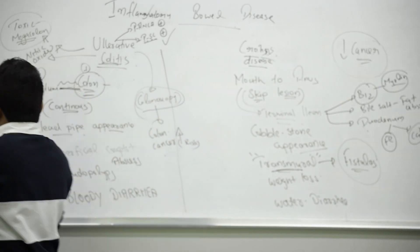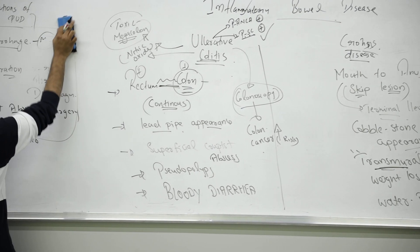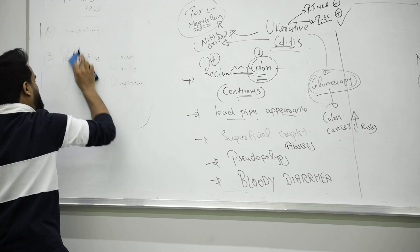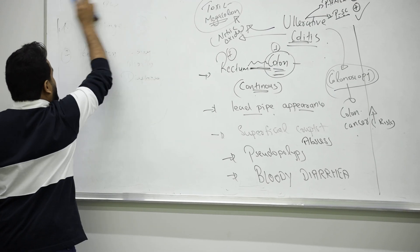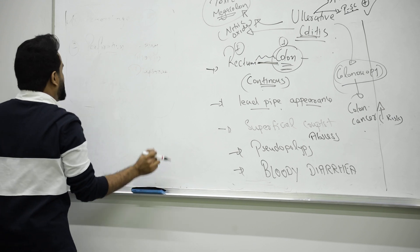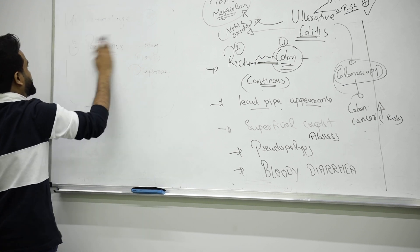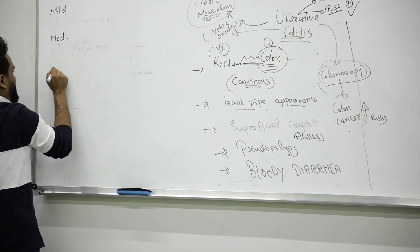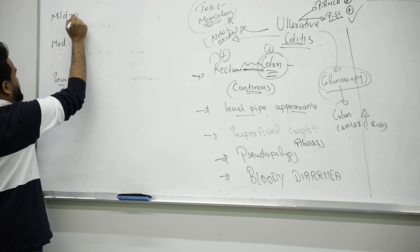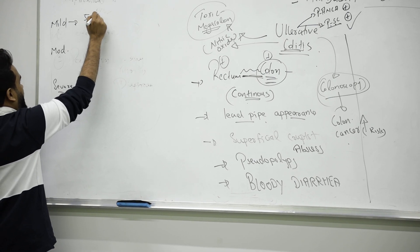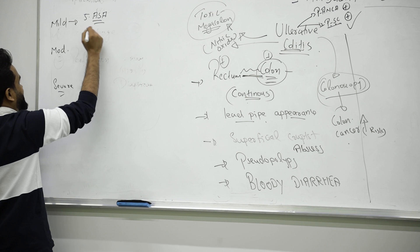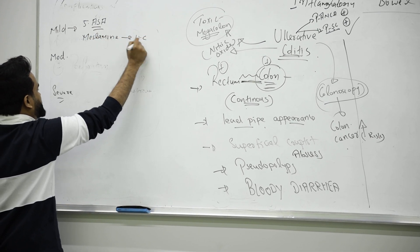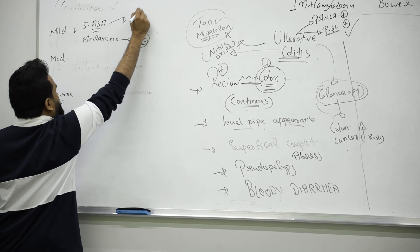Now we will go for how we manage them. IBD is very important. Crohn's and all, if you don't treat it, can become cancer. You treat according to severity: mild, moderate, and severe cases. For mild cases we give anti-inflammatory like 5-ASA, acetylsalicylic acid or mesalamine. Mesalamine mainly for ulcerative colitis - we can give both. This is for Crohn's mainly we prefer.